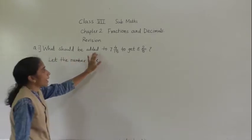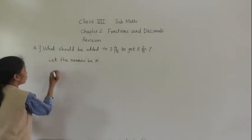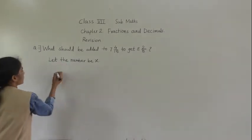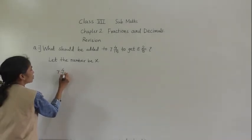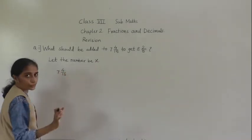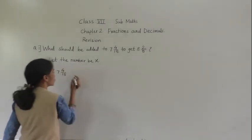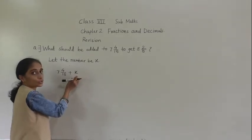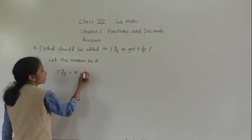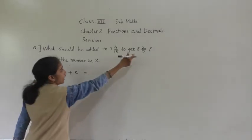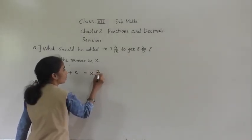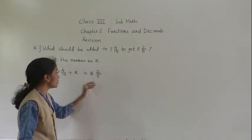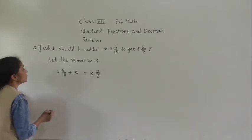What should we add to 7 integer 4 upon 15? I don't know that number. What I add, then I will get this answer. So that number we write as plus x, to get 8 integer 2 upon 5. Means to get this number, which number we have to add.